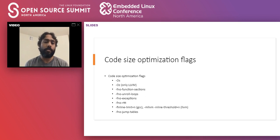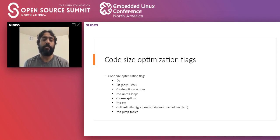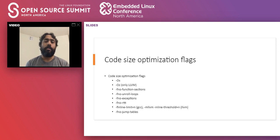The third flag is -fno-function-sections. When compiling C/C++ programs with GCC or LLVM, functions can sometimes be placed in their own sections. This is helpful for debugging and profiling, but in production it increases code size quite a bit. If you have this flag enabled by mistake or by build system rules, you want to add -fno-function-sections to disable -ffunction-sections, which places every function in a separate section.